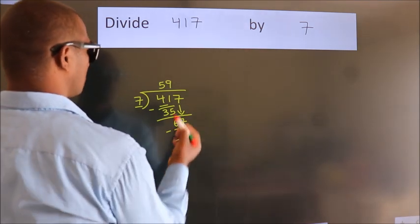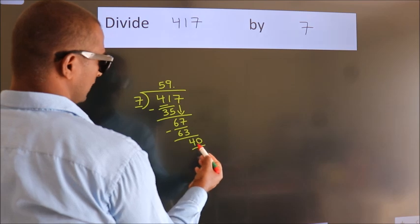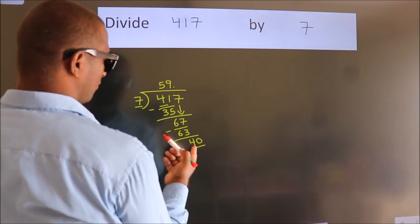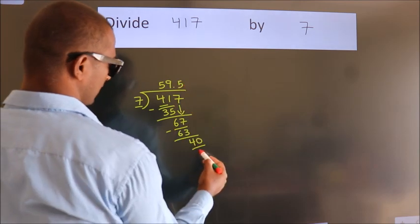So, what we do is, we put dot, take 0. So, 40. A number close to 40 in the 7 table is 7 fives, 35.